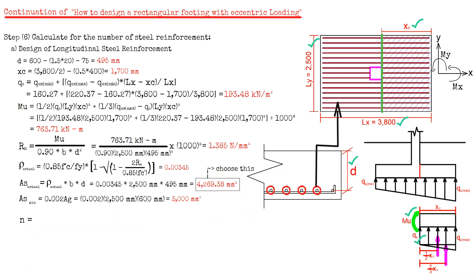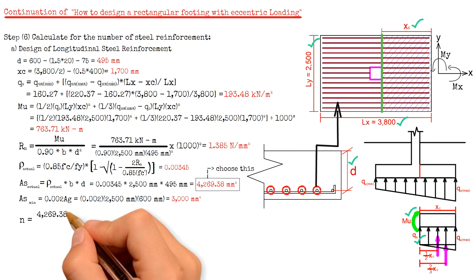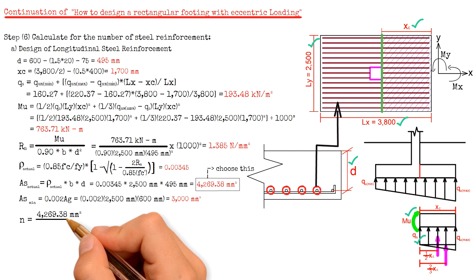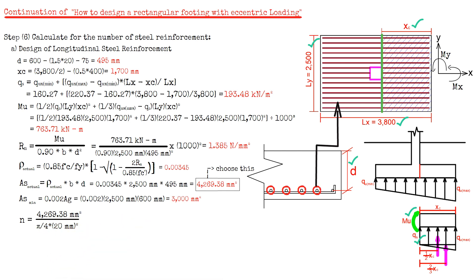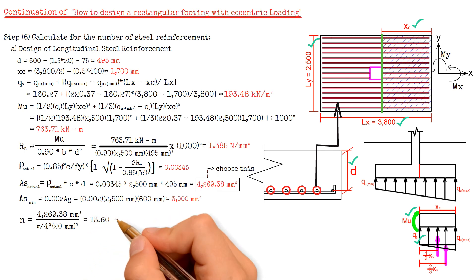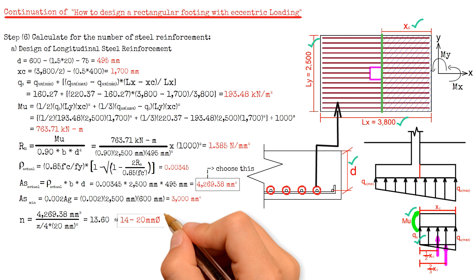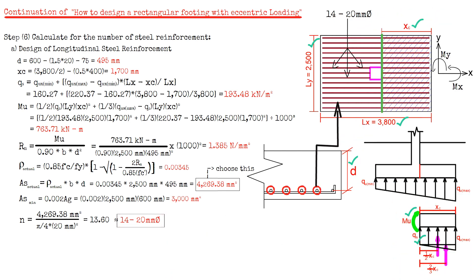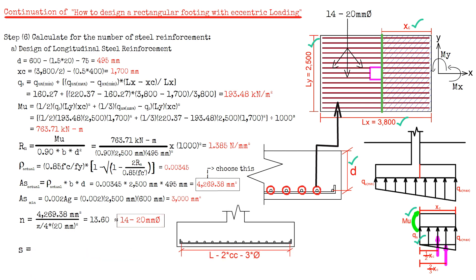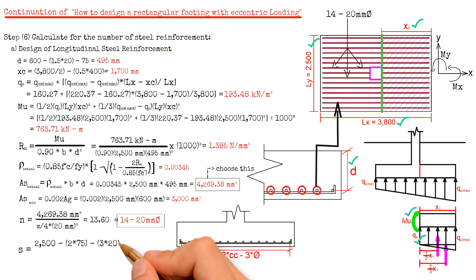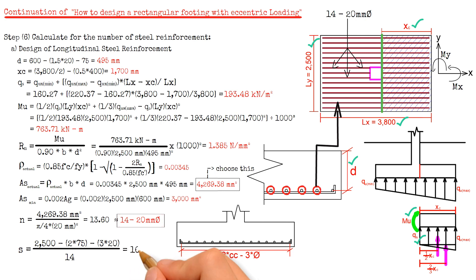To calculate the number of longitudinal steel reinforcement, we divide 4,269.38 mm² by the area of one bar (π/4 times 20 mm squared), giving 13.6, rounded up to 14. The final number of longitudinal steel reinforcement is 14 pieces of 20 mm diameter bars. For spacing: (2500 minus 2 times 75 mm cover minus 3 times 20 mm bar diameter) divided by 14 equals 164 mm, which may be reduced to 160 mm.